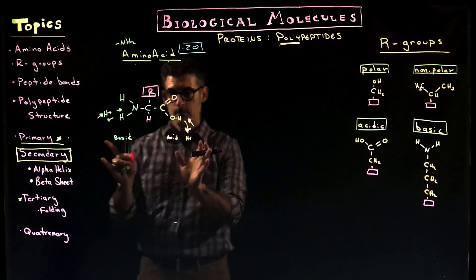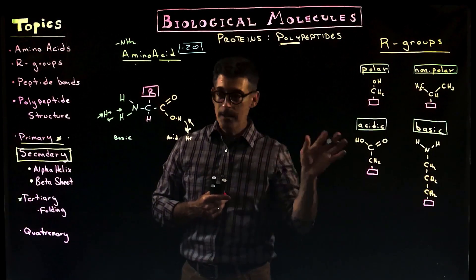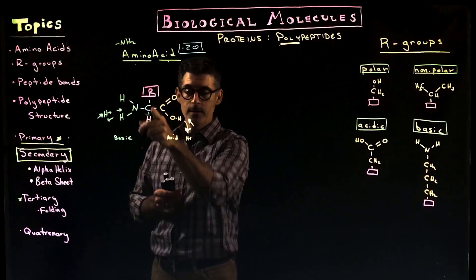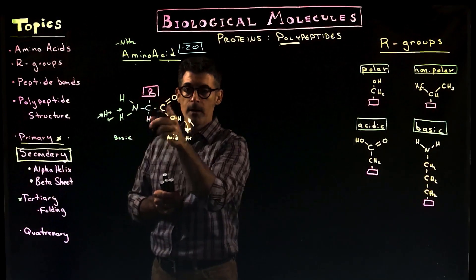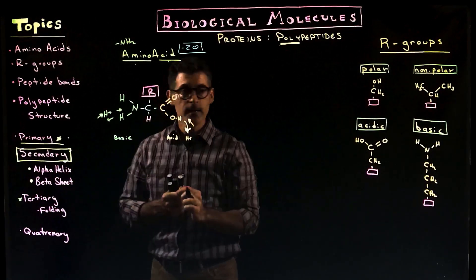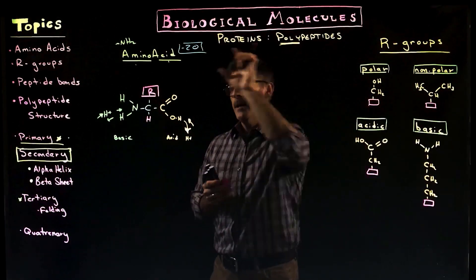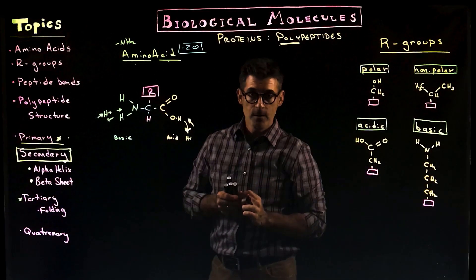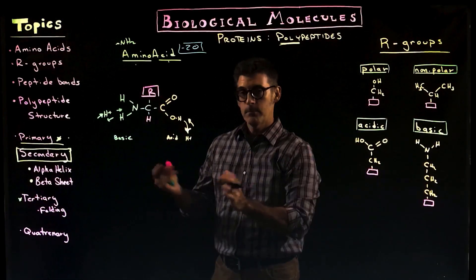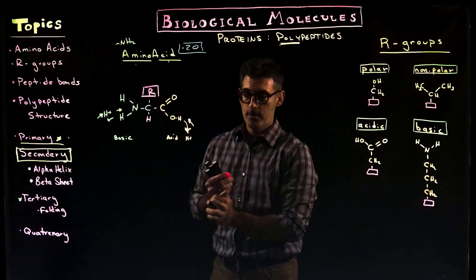You're going to be asked to draw a simple, generic amino acid — not any particular one. Very simply: a central carbon, an amino group, a carboxyl group, a hydrogen, and R. That's it. You won't need to draw specific R groups unless you're in a biochemistry course. For this intro biology course on cell biology, we just need to know this part of the structure.